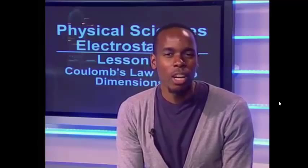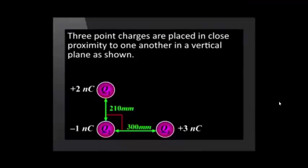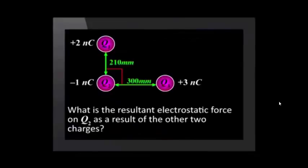Let us have a look at an example like this. Three point charges are placed in close proximity to one another in a vertical plane. The charges and distances between them are shown. What is the resultant electrostatic force on Q2 as a result of the other two charges?